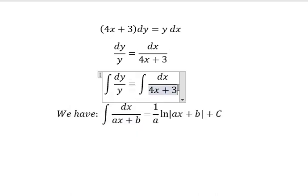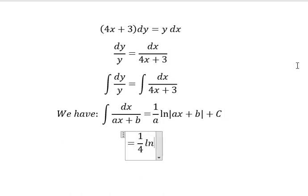And you get 1 over 4 ln of the absolute value of 4x plus 3.